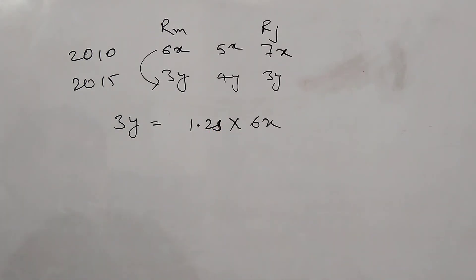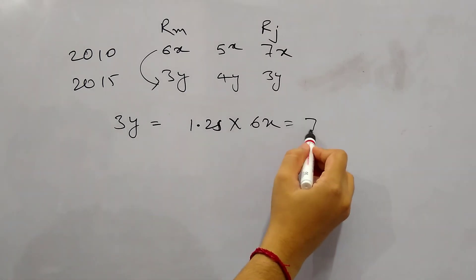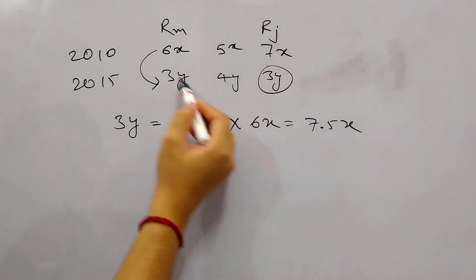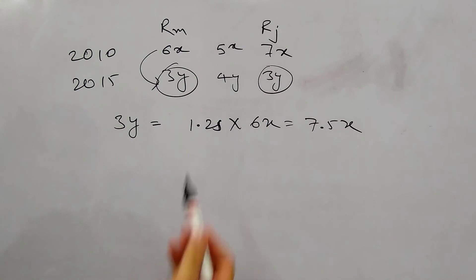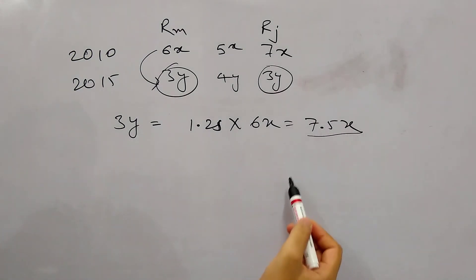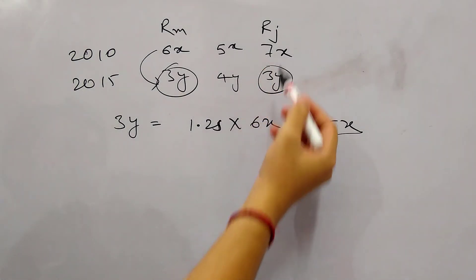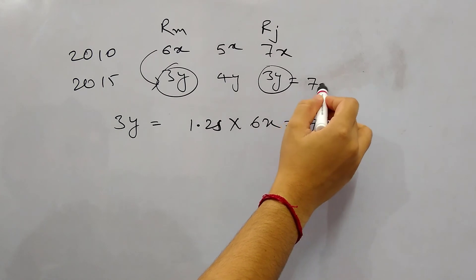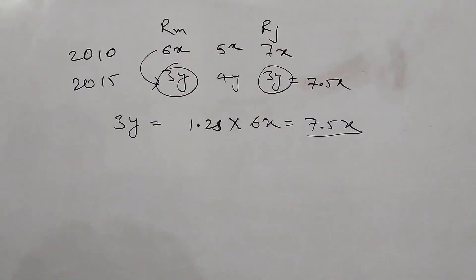So if 3y is 1.25 into 6x, that means 3y = 7.5x. If you see Rajesh's current salary, it's again 3y. So Rajesh and Ramesh both have the same current salary. If 3y is 7.5x, then Rajesh's current salary is also 7.5x. In 2010 Rajesh's salary was 7x, and in 2015 it's 7.5x.